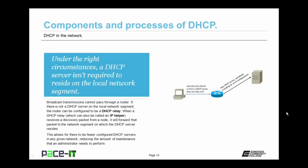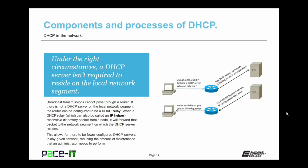Under the right circumstances, a DHCP server isn't required to reside on the local network segment. As a general rule, broadcast transmissions cannot pass through a router. But if there is not a DHCP server on the local network segment, the router can be configured to be a DHCP relay. A DHCP relay — also called an IP helper — when it receives a discovery packet from a node, will forward that packet to the network segment on which the DHCP server resides. This allows for fewer configured DHCP servers in any given network, reducing the amount of maintenance an administrator needs to perform.